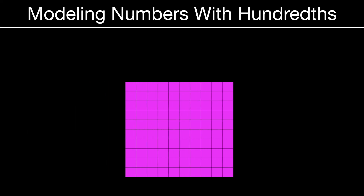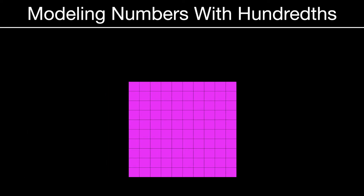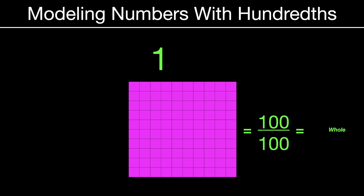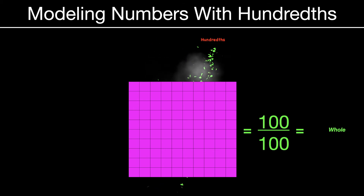Let's look at some models with hundredths. This would represent one whole because the hundredths grid there is completely shaded. So in other words, one hundred out of one hundred are shaded. That would represent a whole fraction, and whole fractions always represent one whole. But in decimal form, we would say that it's one decimal zero zero, because we're talking about hundredths today — with that second zero in the hundredths place value.